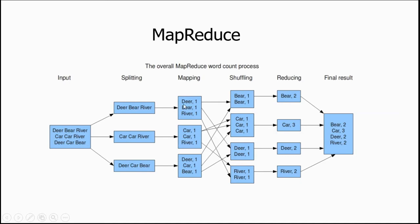In the map phase, dear is one, bear is one, river is one. We have taken the key as the word and the value as one. Car is one, again car is one, and river is one. We are not aggregating here — for each word we are saying car comes one time, dear one, car one, bear one. This is your map phase, which takes a set of data and converts it into another set of data.